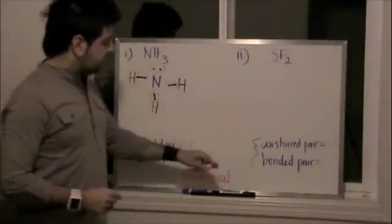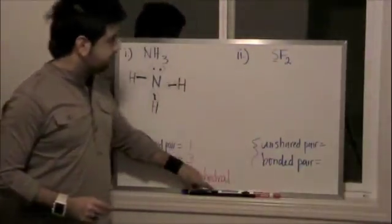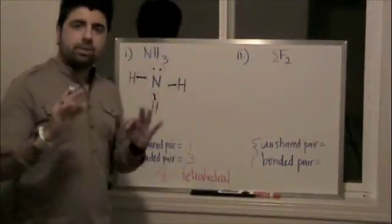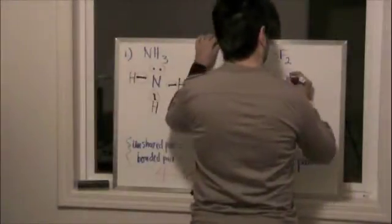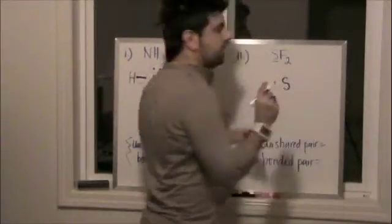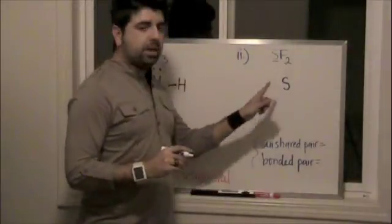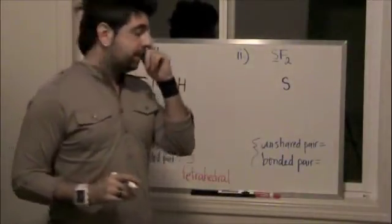So, let's look at our next example. SF2. So, we know the single atom is our central atom, sulfur. If we look at the periodic table, we're going to know that it has six valence electrons.